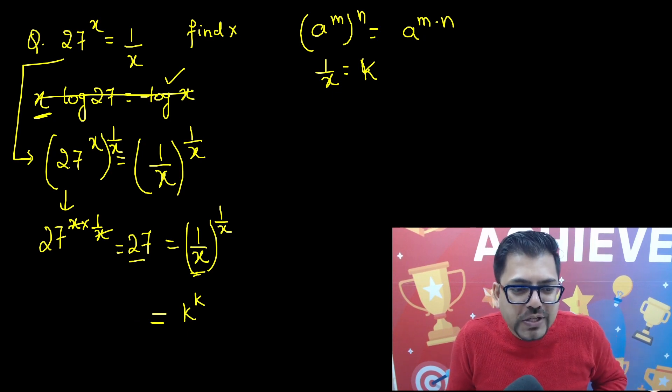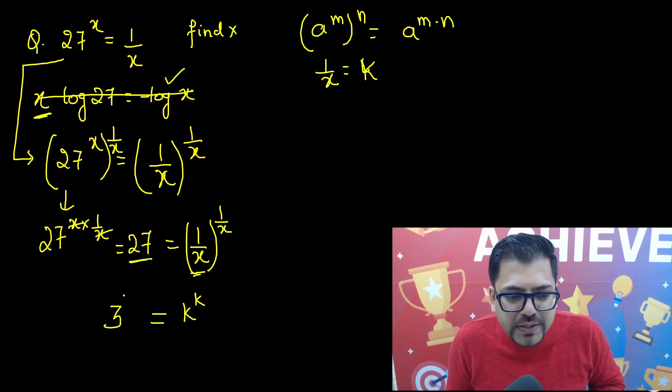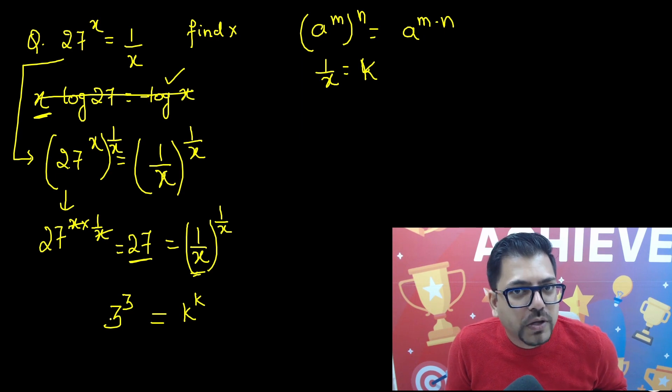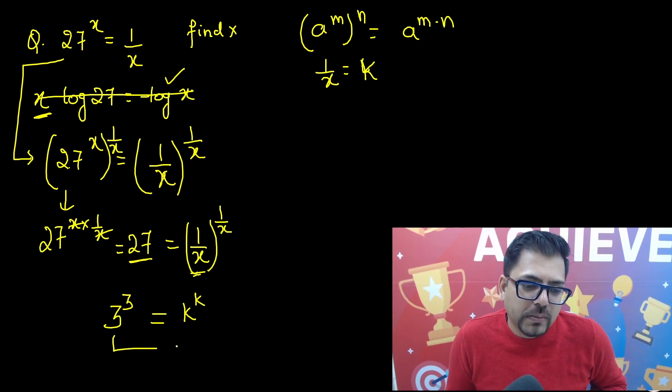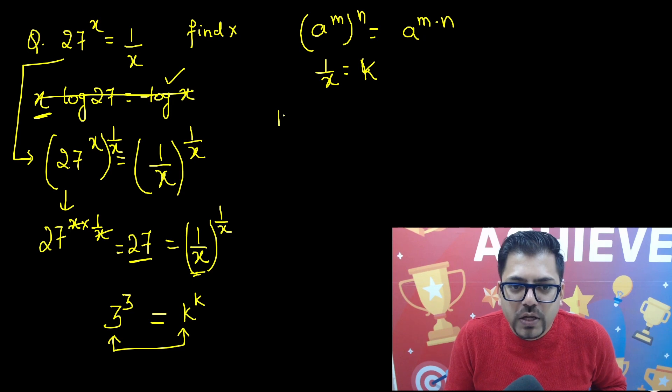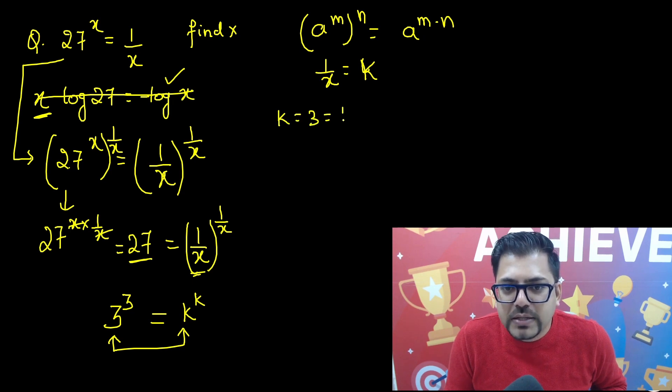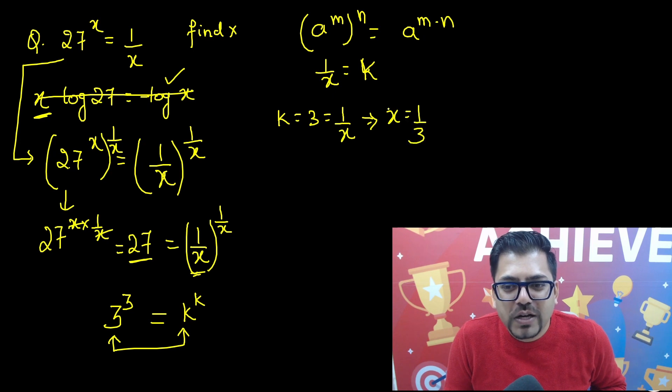And here you will have that. So this is 27. 27 can be written as 3 raised to power 3. 3 raised to power 3, 27 hota hai. Okay, bale bale, we got the answer that k must be equals to 3. So k must be equals to 3. k is nothing but 1 by x. And hence we have got the value of x is equals to 1 upon 3.